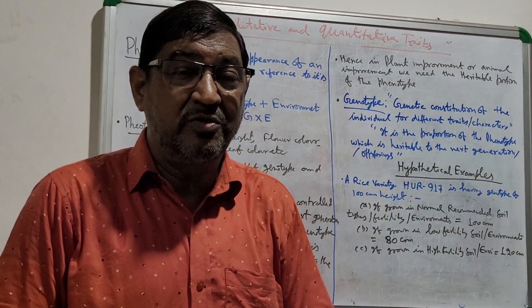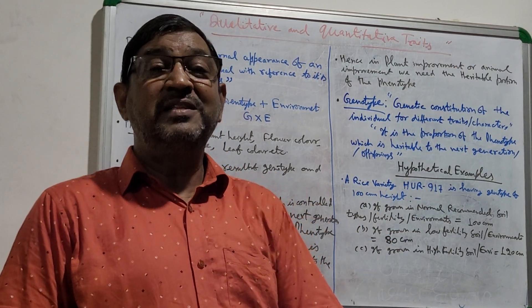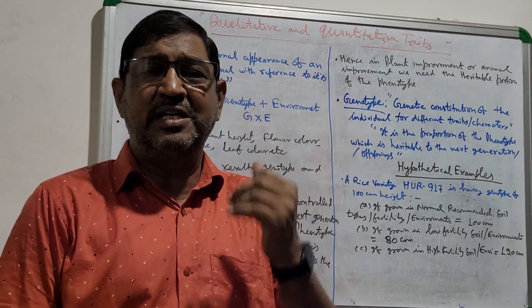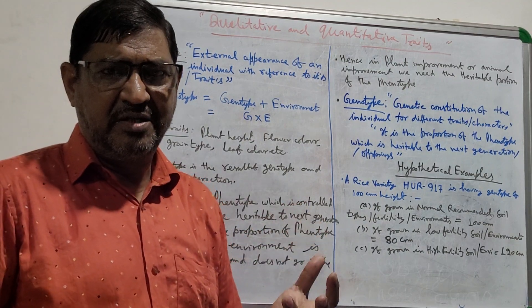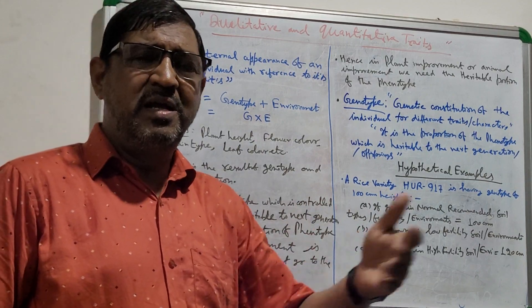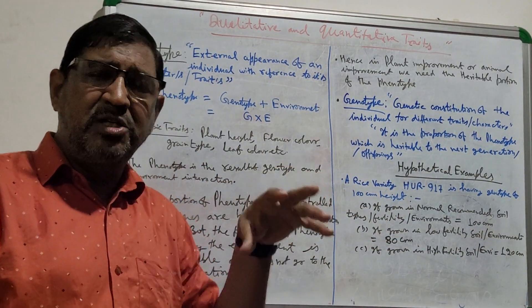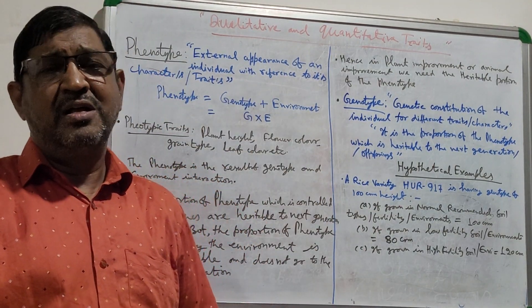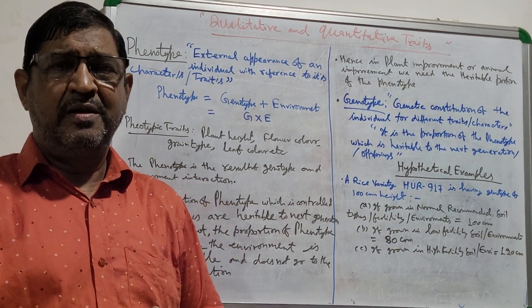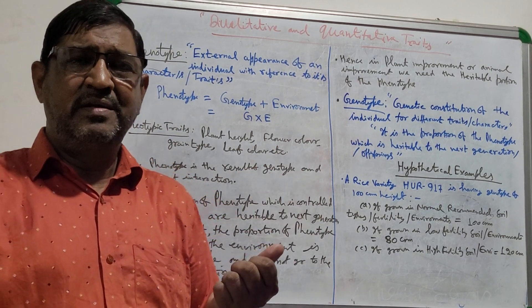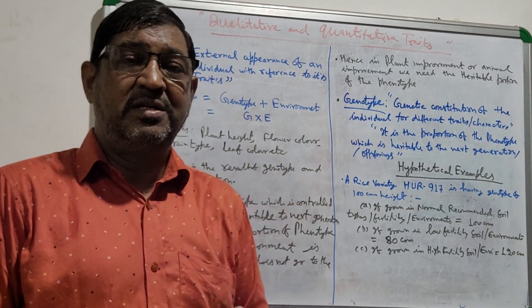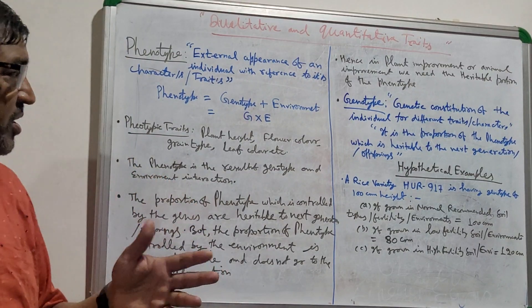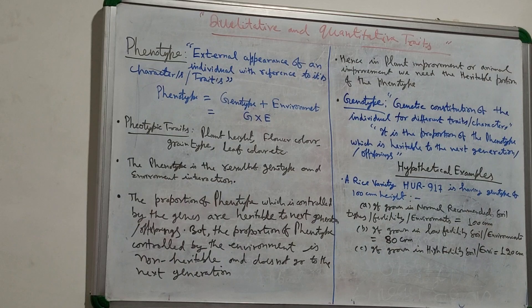If you harvest the 120 centimeter plant and grow its progeny in the next generation under normal conditions, you are going to get 100 centimeter progeny — it has come down. The actual genotype is 100 centimeters; that was just the phenotype. Selection of plants on the basis of phenotype alone will be misleading without knowledge of its genetic value for that particular trait. Now I will be switching to the traits — qualitative and quantitative.